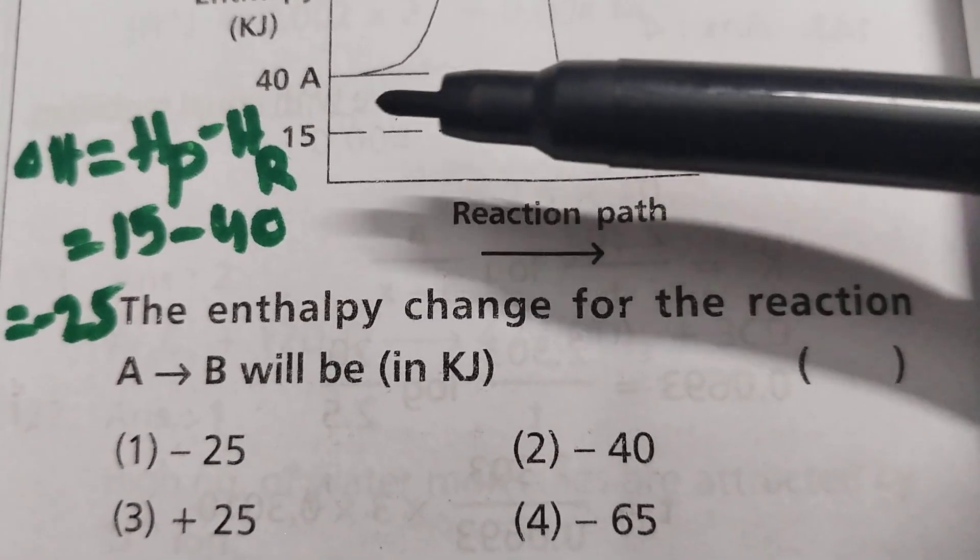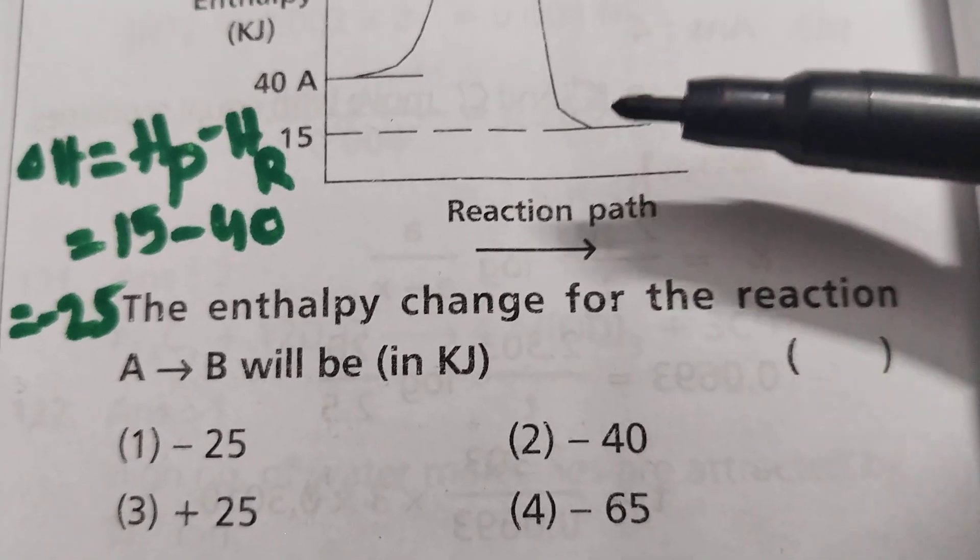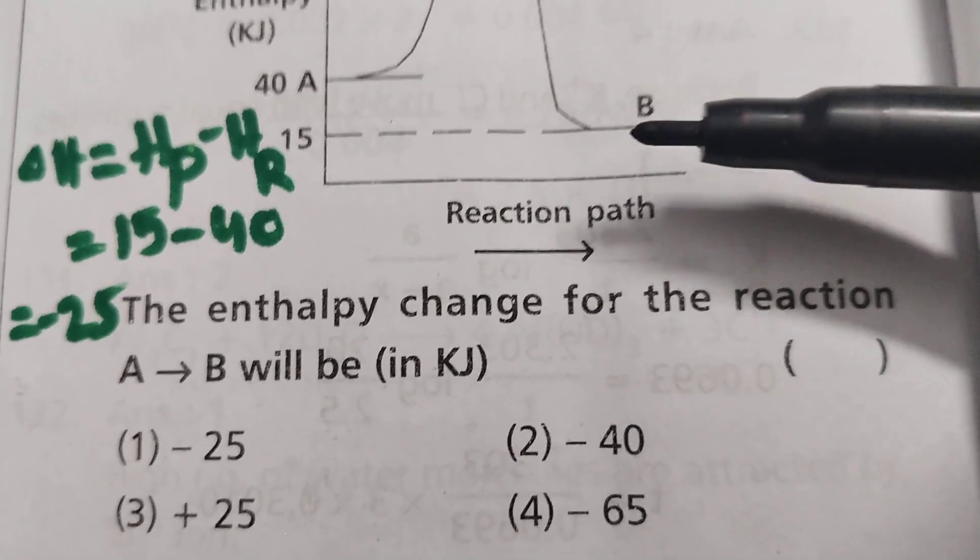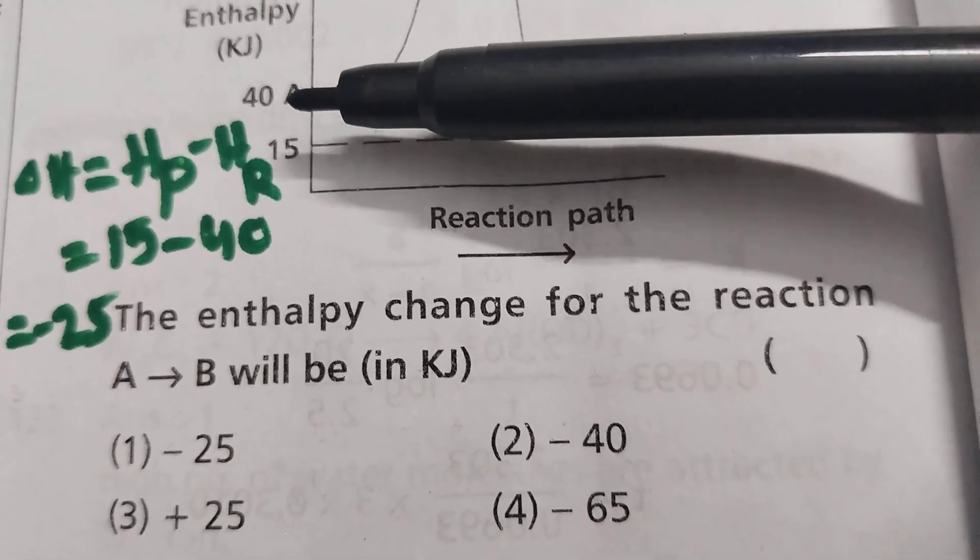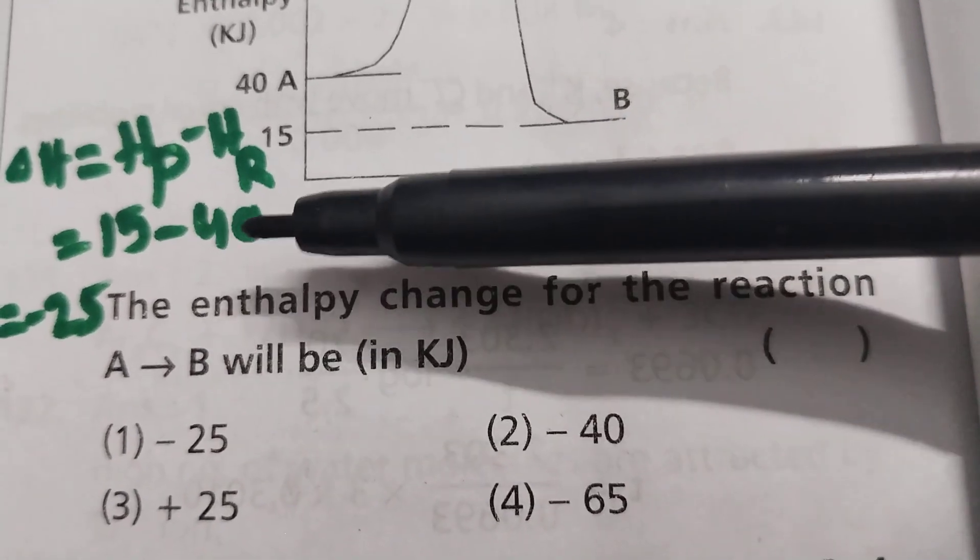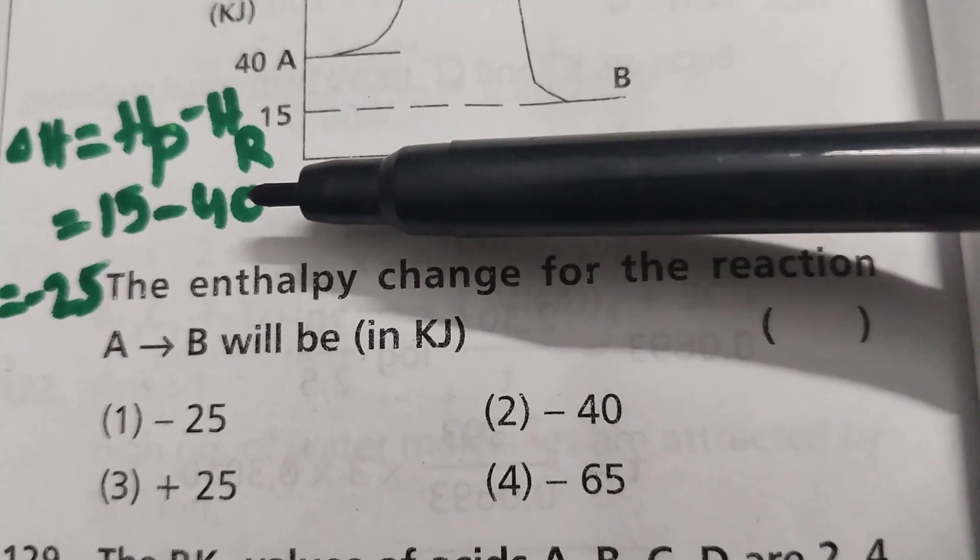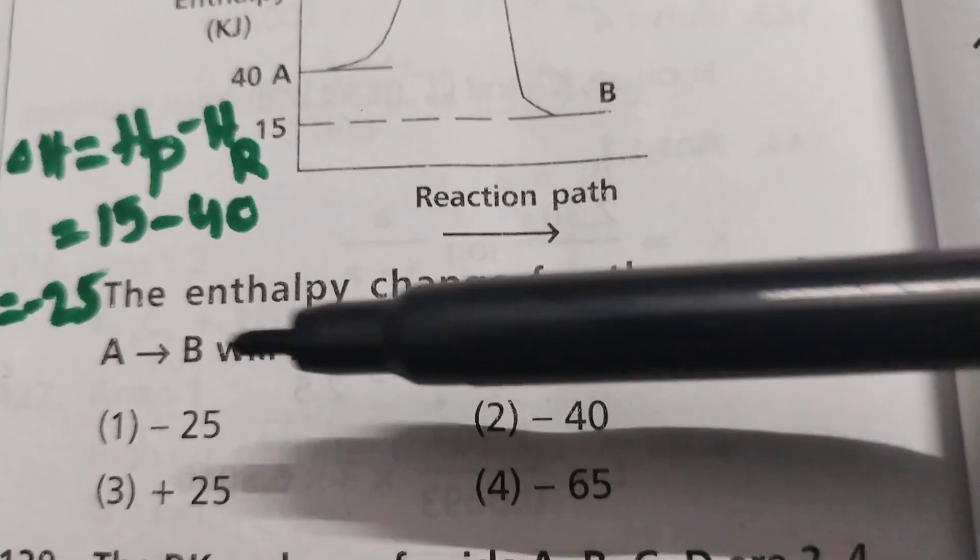You see, this is B: 15. Enthalpy of the products is 15. Delta H equals 15 minus reactant, so 40. So 15 minus 40, that equals minus 25 - that's the right answer.